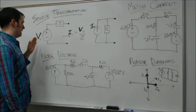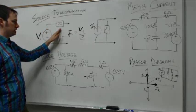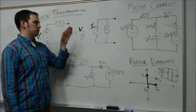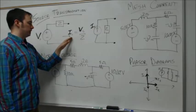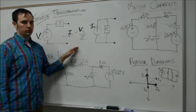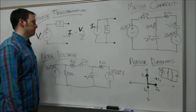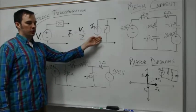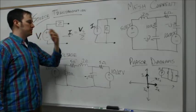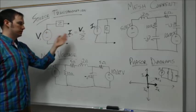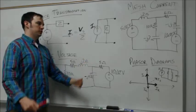We can do source transformation where if we have a voltage source in series with a given impedance, we can transform that to a current source in parallel with the same impedance value, related through Vs over Z based on Ohm's law. We can also go from the parallel combination back to the voltage source.